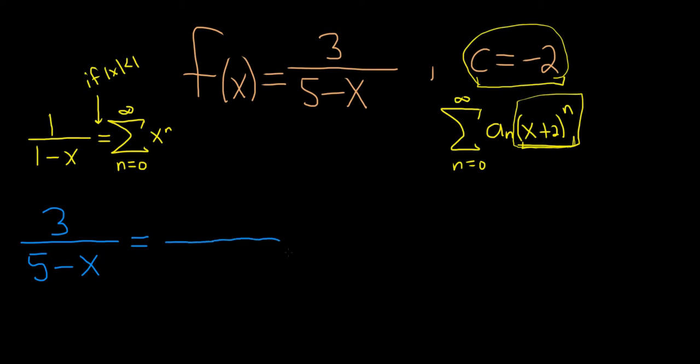So the first thing you do is you think about the center. So the center is negative 2, and you want it to fit the form of 1 over 1 minus x. But it really needs to be 1 over 1 minus x plus 2, right? Because the center is negative 2, so you need an x plus 2 there. So the first thing you do is you put an x plus 2 here.